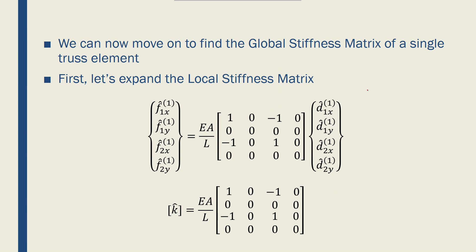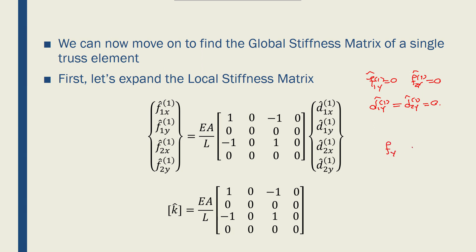In truss analysis, we don't have F1y and F2y at nodes — we have no shear forces and no transverse displacements, so D1y equals D2y equals zero. The same is true for moments and rotations. However, when converting to the global coordinate system, we will have F1y, F2y, D1y, and D2y. We still won't have rotations and moments, but in the global coordinate system we will have forces in the y direction as well.